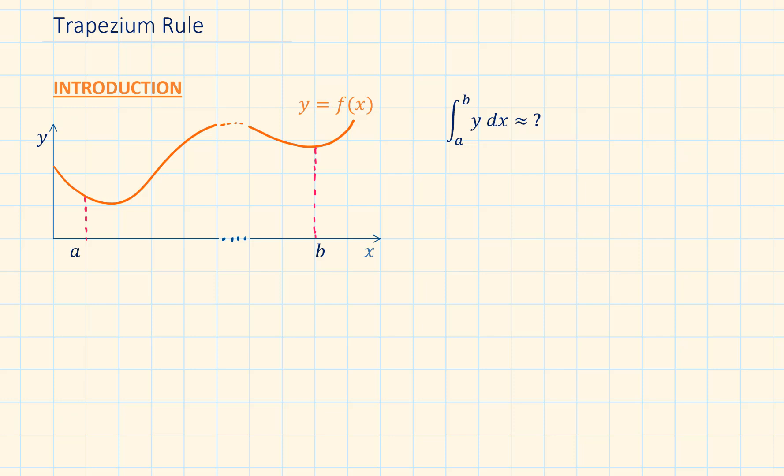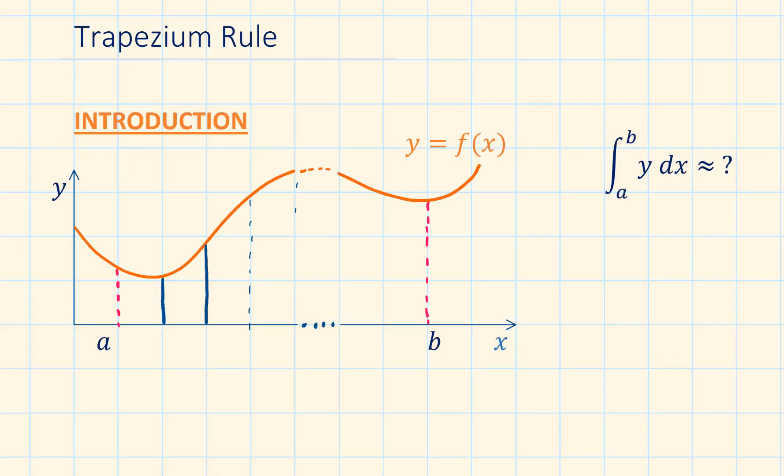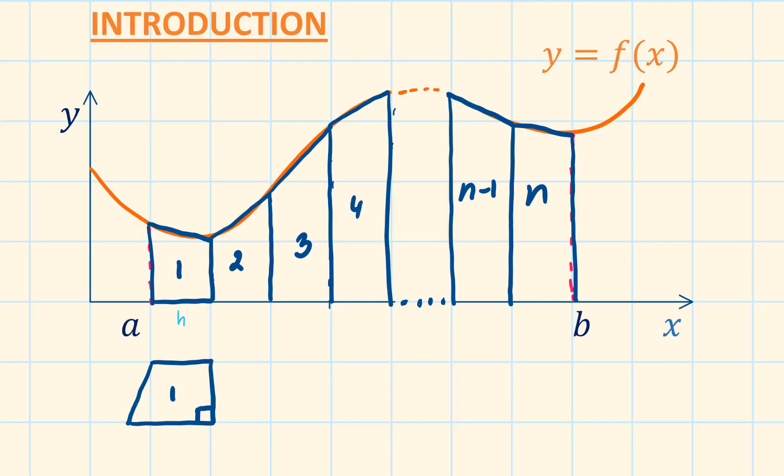Consider the curve y equals fx. To approximate the area given by the definite integral of y from a to b, you can divide the area up into n equal strips. Each strip will be of width h, where h equals b minus a over n.